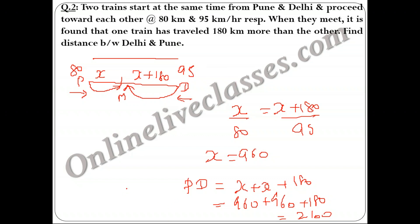So the distance between Pune and Delhi is 2100 km. Kindly pause the video and note down the solution, then move on to the next question.